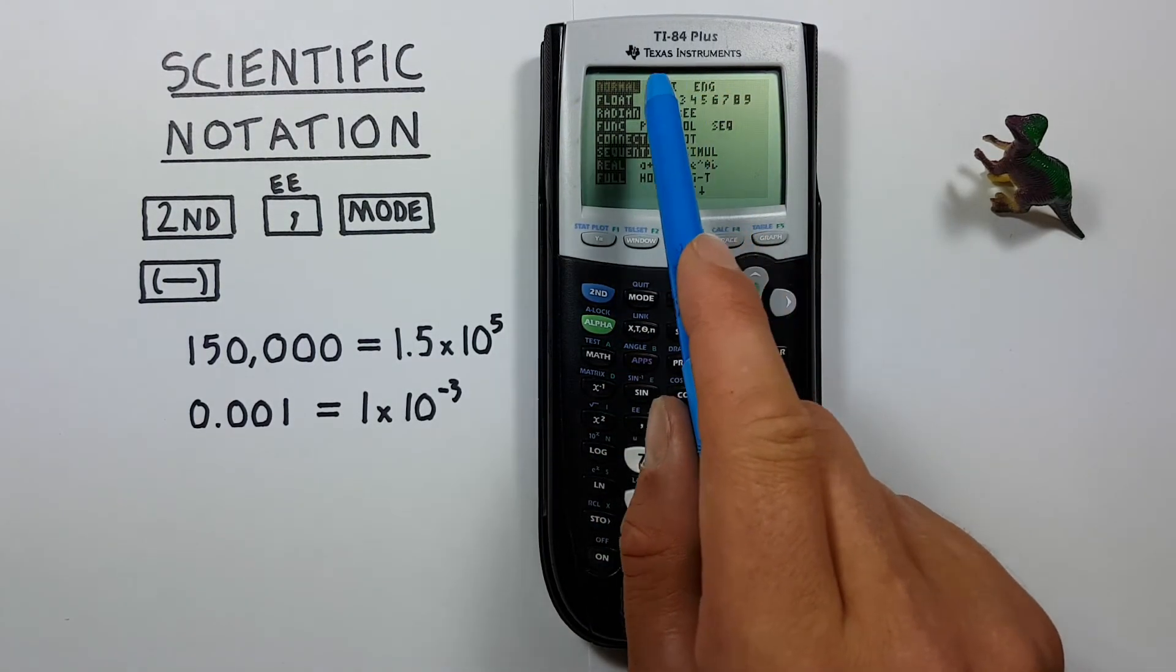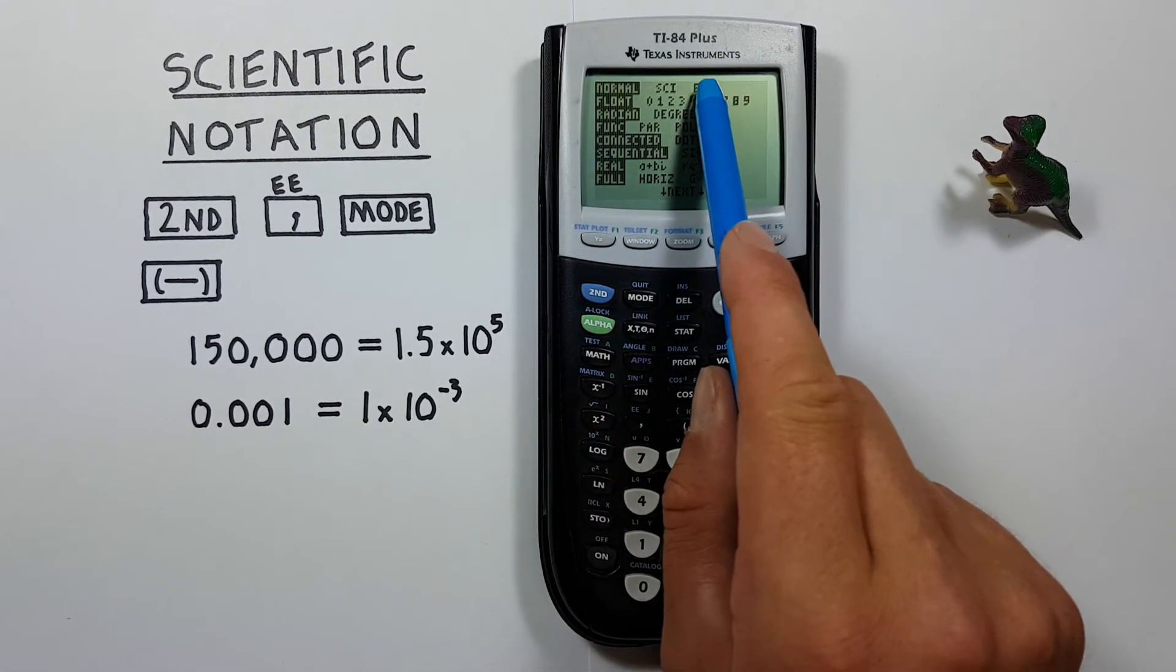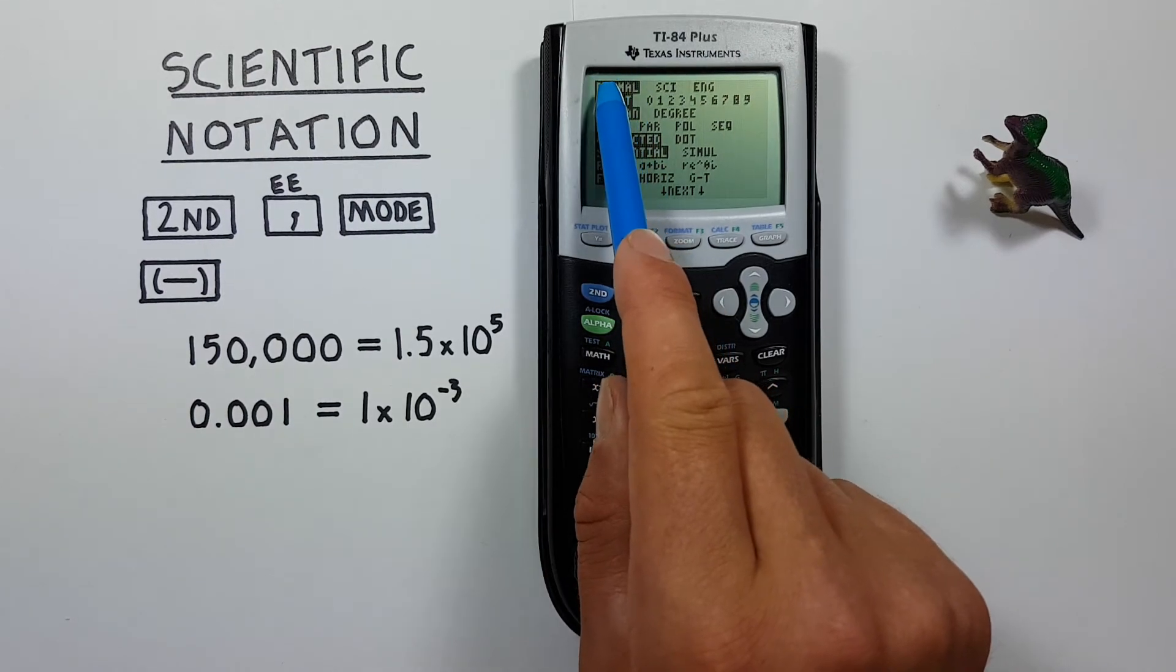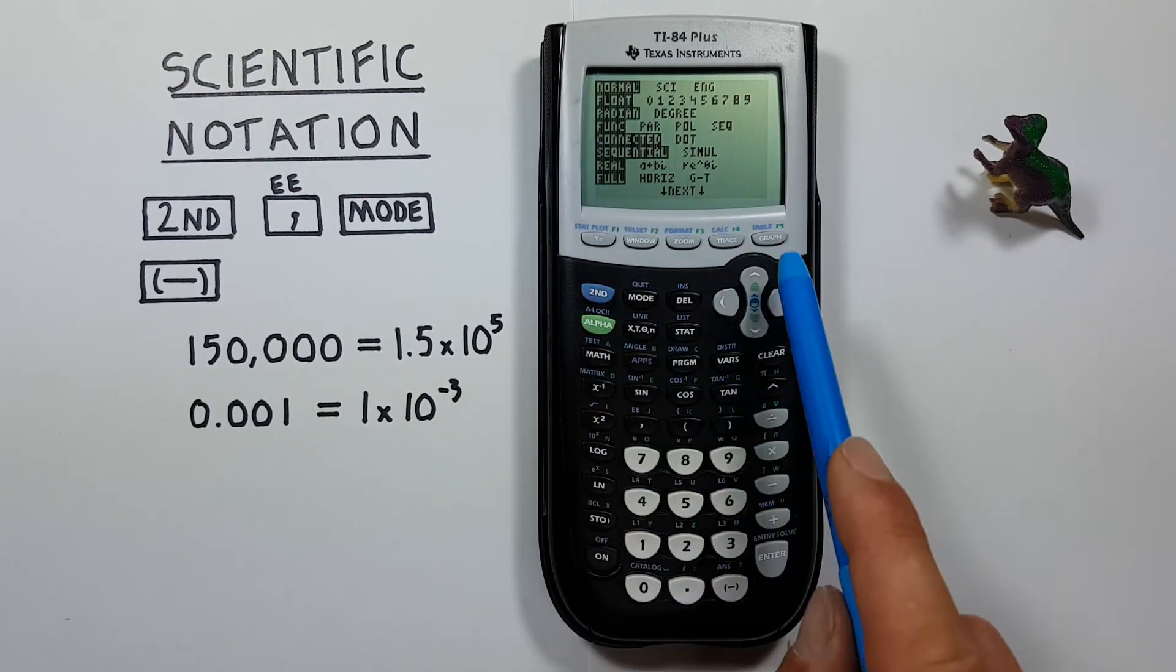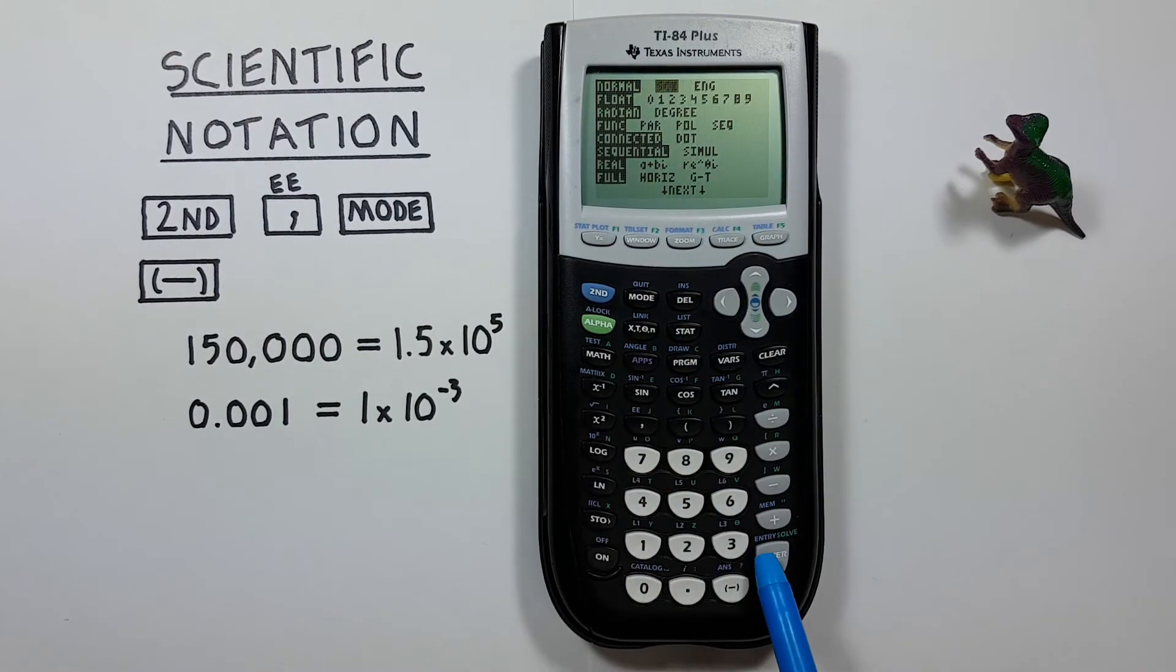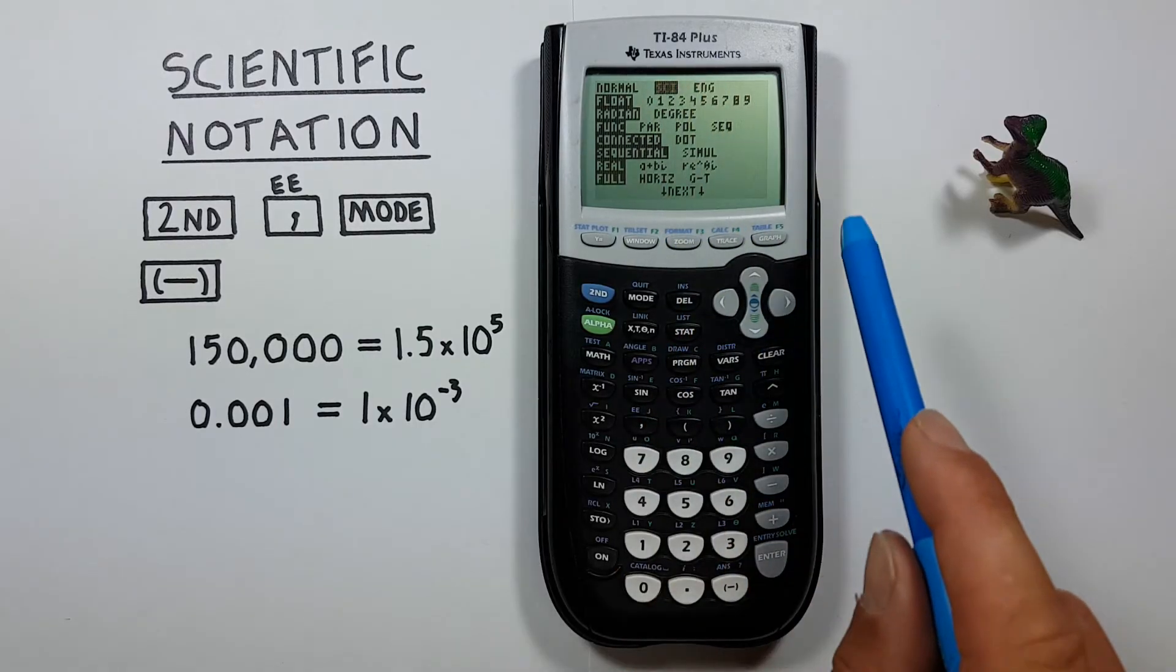These represent normal mode, scientific notation mode, and engineering mode. Typically your calculator will be on normal mode. But what we want to do is scroll one to the right so that SCI is highlighted and press enter. This should now be flashing. And if we press clear...